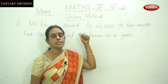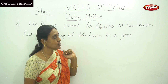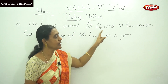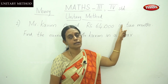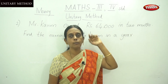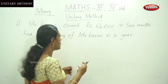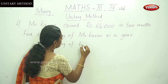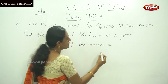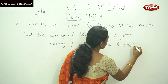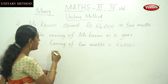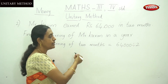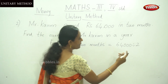The earning of 2 months for Mr. Kareem is given as 64,000. You have to calculate the earning of each month. So first, divide 64,000 by 2, because this is the salary of that person for 2 months. Earning of 2 months equals 64,000 divided by 2.